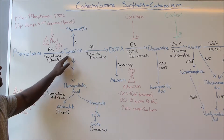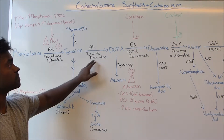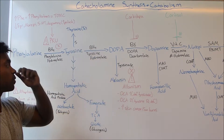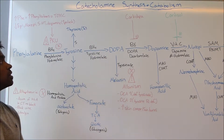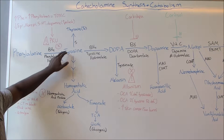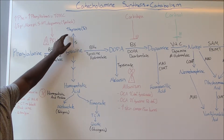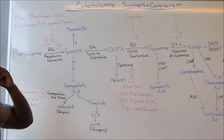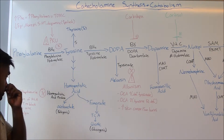Tyrosine can also be hydroxylated using tyrosine hydroxylase and BH4 to form DOPA. Alternatively, tyrosine with the addition of iodine can go on to form thyroxine, which is a very important hormone released by the thyroid.